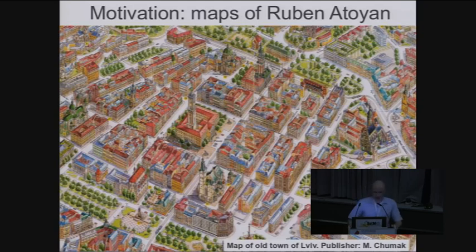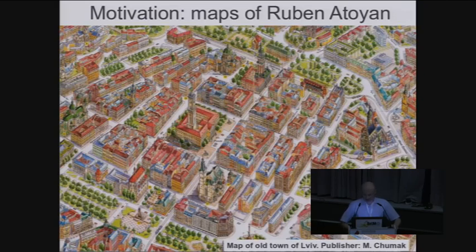But before going to complex things, I decided to experiment with simple things. First, let's see so-called two and a half dimensional maps. What is two and a half dimensional maps? It's just an ordinary map with an overlay of 3D buildings rendered in oblique projection. Here's an example from the Russian company called Double Giz. We have here some buildings rendered in oblique projection above a normal 2D map.